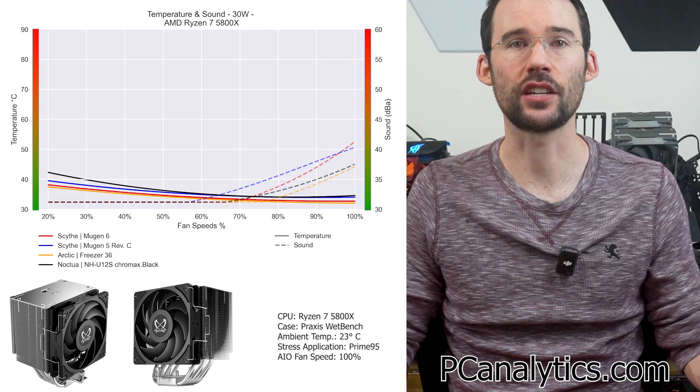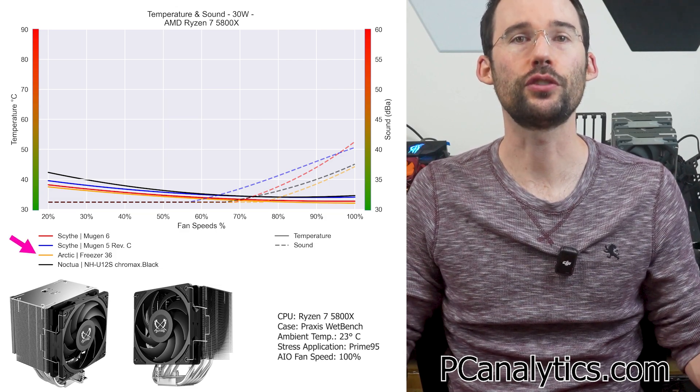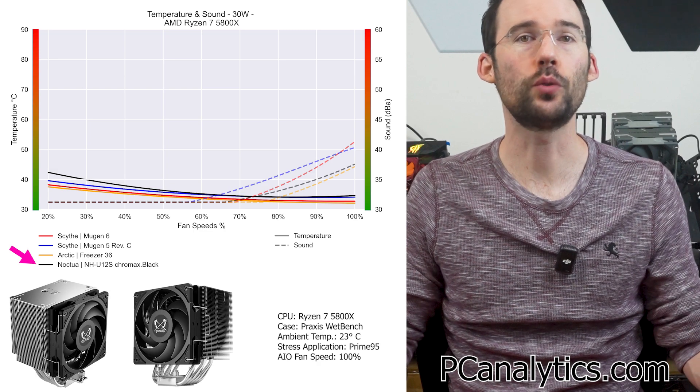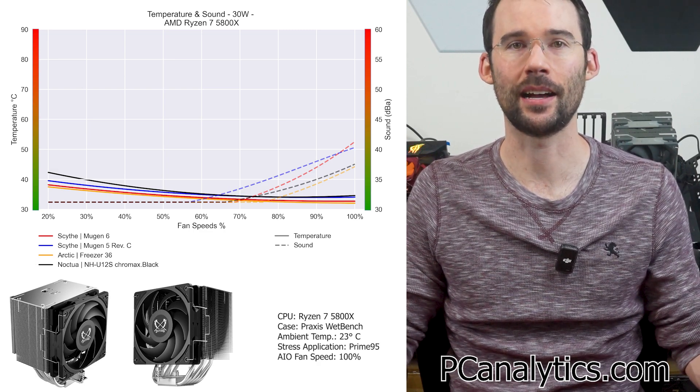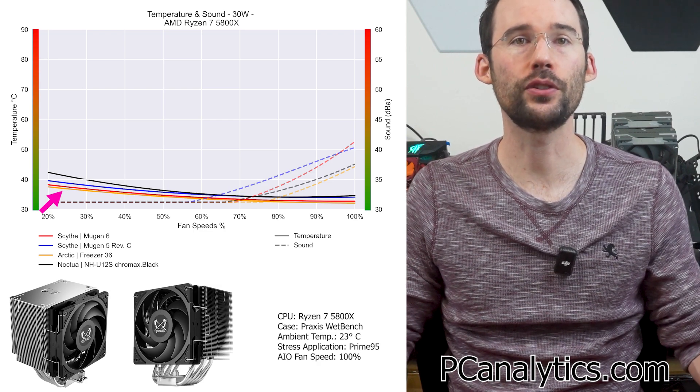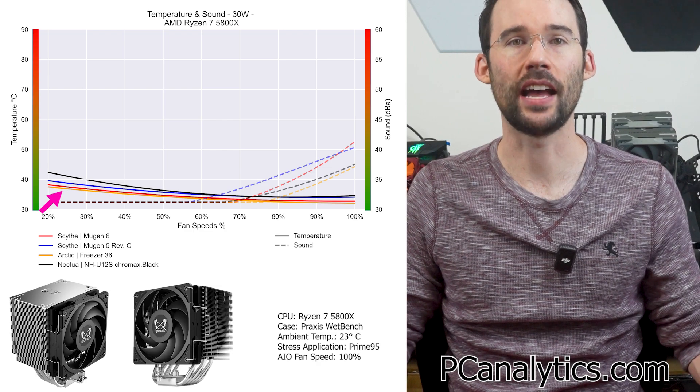Next up, we'll compare the Scythe Mugen 6 to a few other coolers in its weight class, including the Mugen 5 Rev-C, the Arctic Freezer 36, and the Noctua NH-U12S. Additional comparisons can be found on my website at PCanalytics.com. At idle, we can see that both the Mugen 6 and the Arctic Freezer 36 have a slight advantage relative to the Mugen 5 and the NH-U12S.